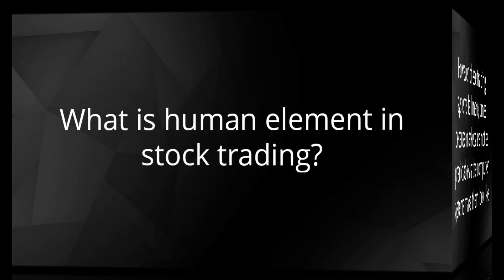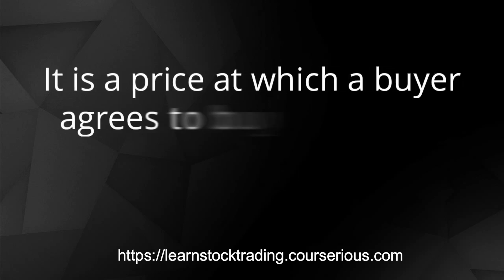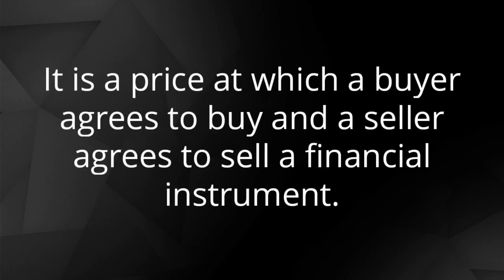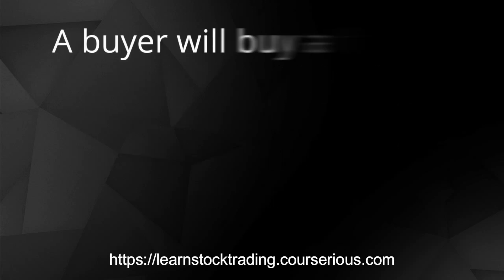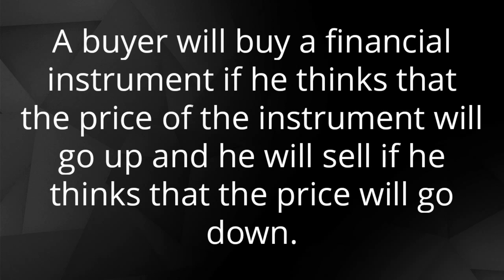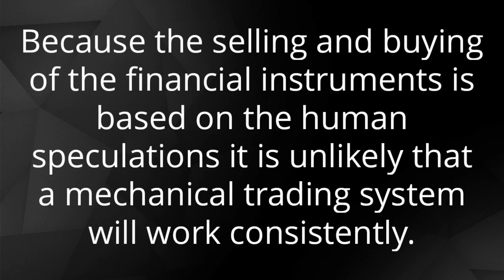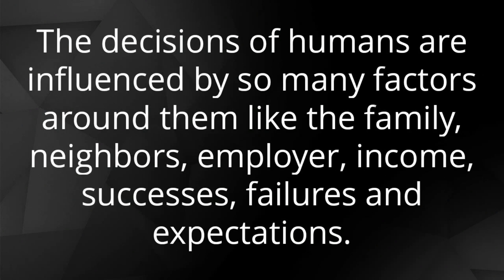What is the human element in stock trading? The price of a financial instrument shows a consensus — it is the price at which a buyer agrees to buy and a seller agrees to sell. A buyer will buy a financial instrument if he thinks the price will go up, and he will sell if he thinks the price will go down. Because the buying and selling of financial instruments is based on human speculation, it is unlikely that a mechanical trading system will work consistently. The decisions of humans are influenced by so many factors around them, like family, neighbors, employer, income, successes, failures, and expectations.